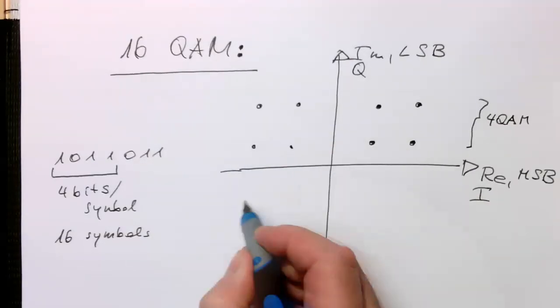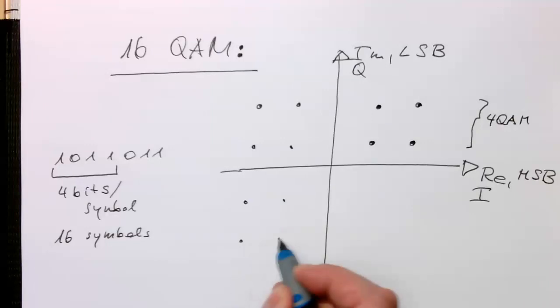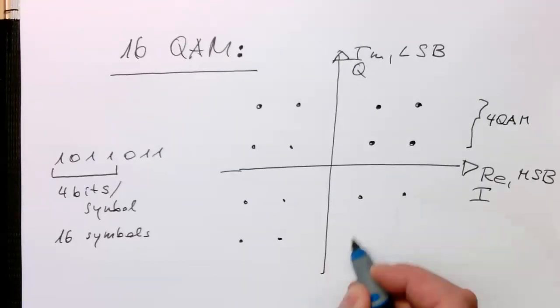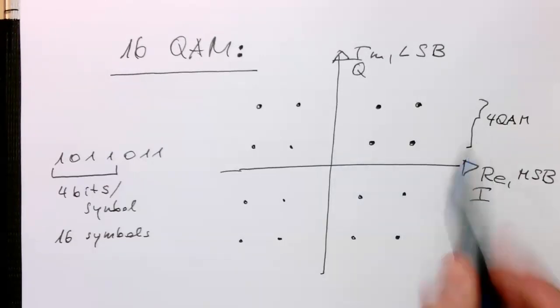So here we've got 4, here we've got 4, here we've got 4 and 4 and 4 here. So this means that in every quadrant here we have got this 4QAM pattern here.